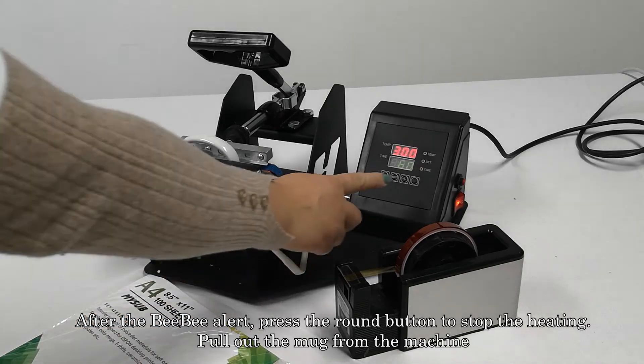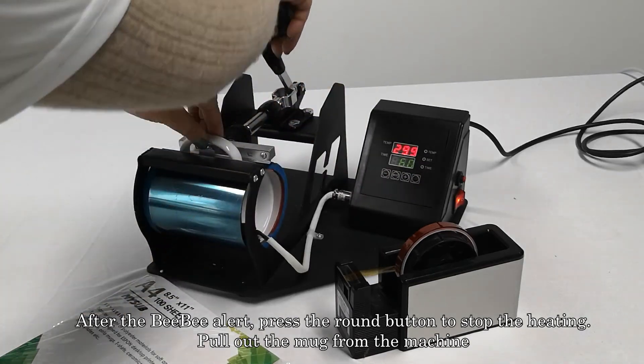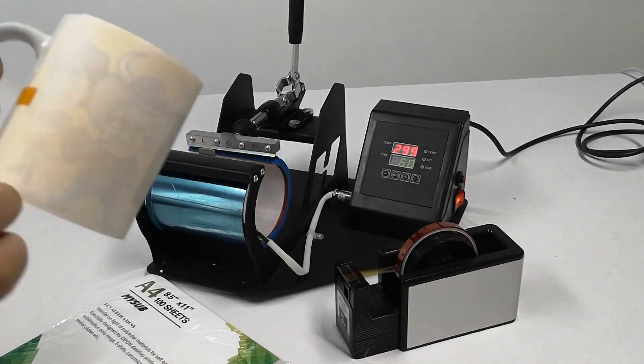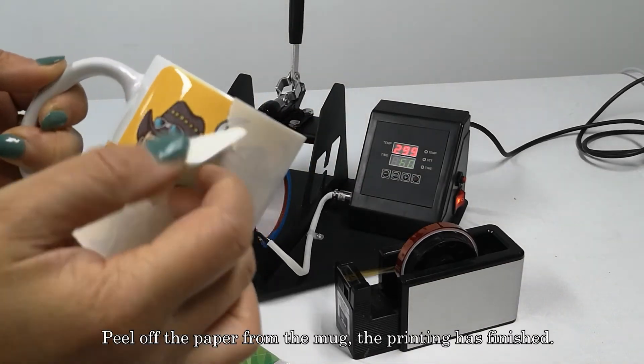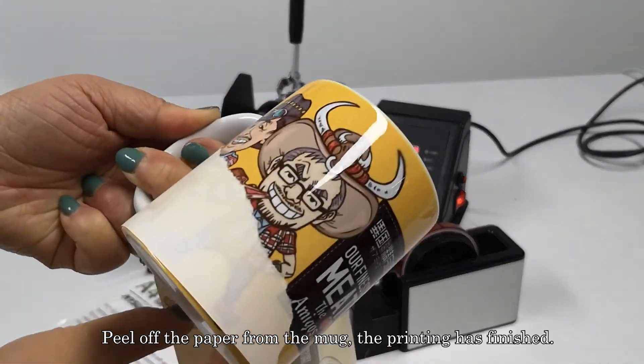After the beep alert, press the round button to stop the heating. Pull out the mug from the machine. Peel off the paper from the mug, and the printing is finished.